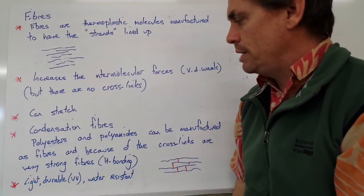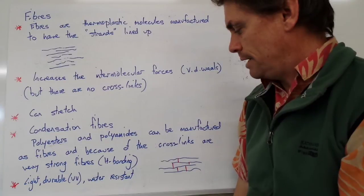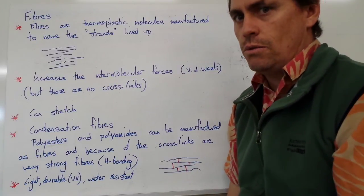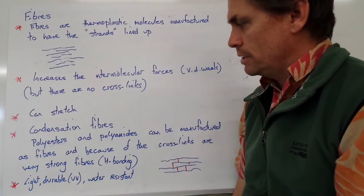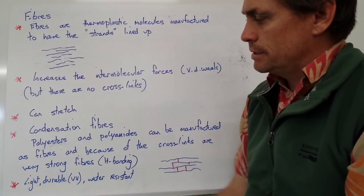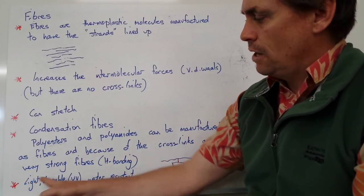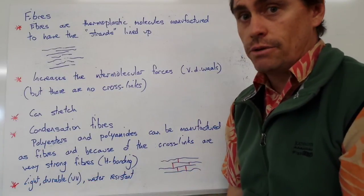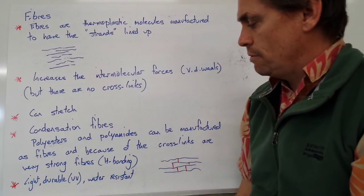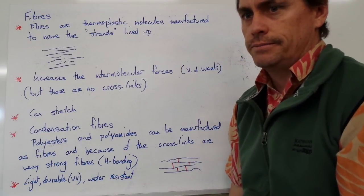We get the interaction between the fibres. They're also a lot more rigid because of those cross-linking bonds as well. Overall, our fibres give us the properties of being light and durable. Generally, they're UV resistant and also water resistant. I'll see you again soon. Thank you.